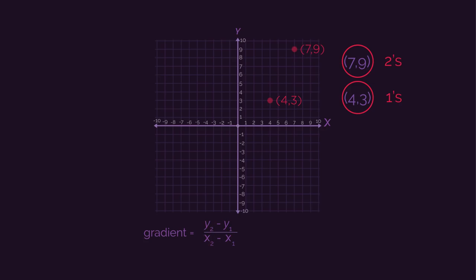So then the gradient is just 9 minus 3 divided by 7 minus 4, which gives us 6 divided by 3. So the gradient is 2. Or you could just stick to the rise divided by the run. 6 divided by 3 is 2.